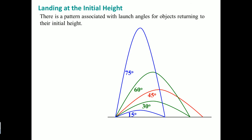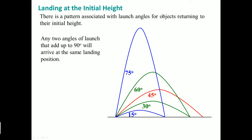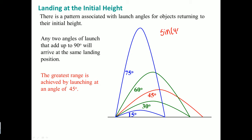For multiple choice, memorize the pattern associated with launch angle, which comes from the unit circle. Two angles that add up to 90 degrees will land at the same horizontal position. The greatest range is achieved by launching at 45 degrees, because at 45 degrees, sine equals cosine.